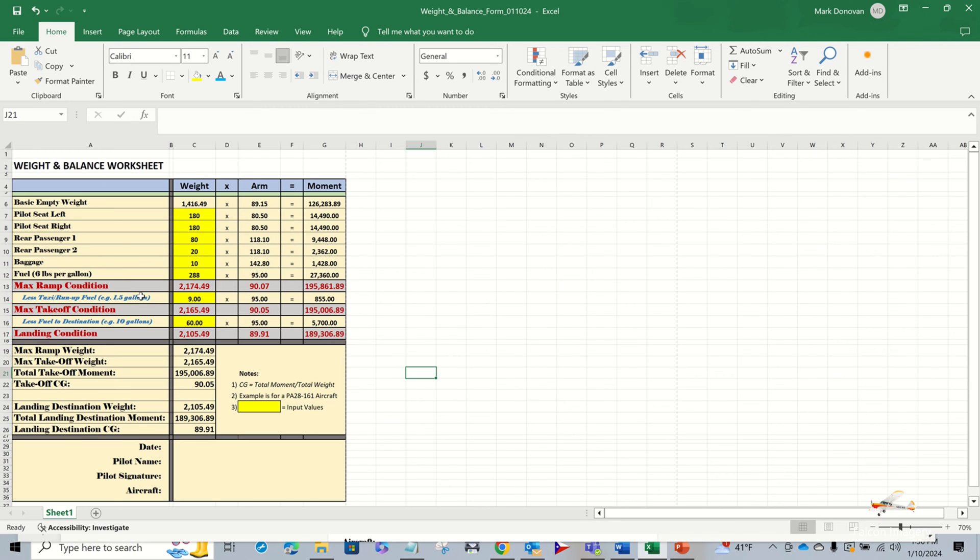Weight of fuel is six pounds per gallon. So we basically have nine pounds that we're going to burn off in weight as we're taxiing and doing a run-up. So that nine pounds times 95 equals 855. And so now we're going to subtract this weight from the initial max ramp condition to get our max takeoff condition. And similarly, we're going to subtract out the moment portion here with less fuel and come up with a slightly lighter moment. And then we do the math again for the center of gravity. We take the moment, divide it by the weight here, and we come up with a new CG. You see it's actually gone forward a little bit.